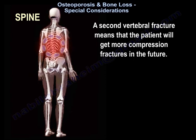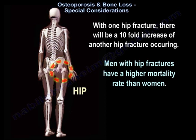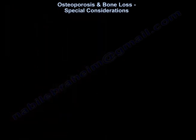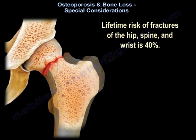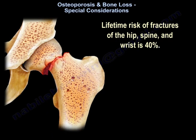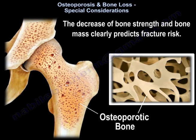A second vertebral fracture means the patient will get more compression fractures in the future. With one hip fracture, there will be a ten-fold increase in risk of another hip fracture occurring. Men with hip fractures have a higher mortality rate than women. The lifetime risk of fractures of the hip, spine, and wrist is 40 percent.